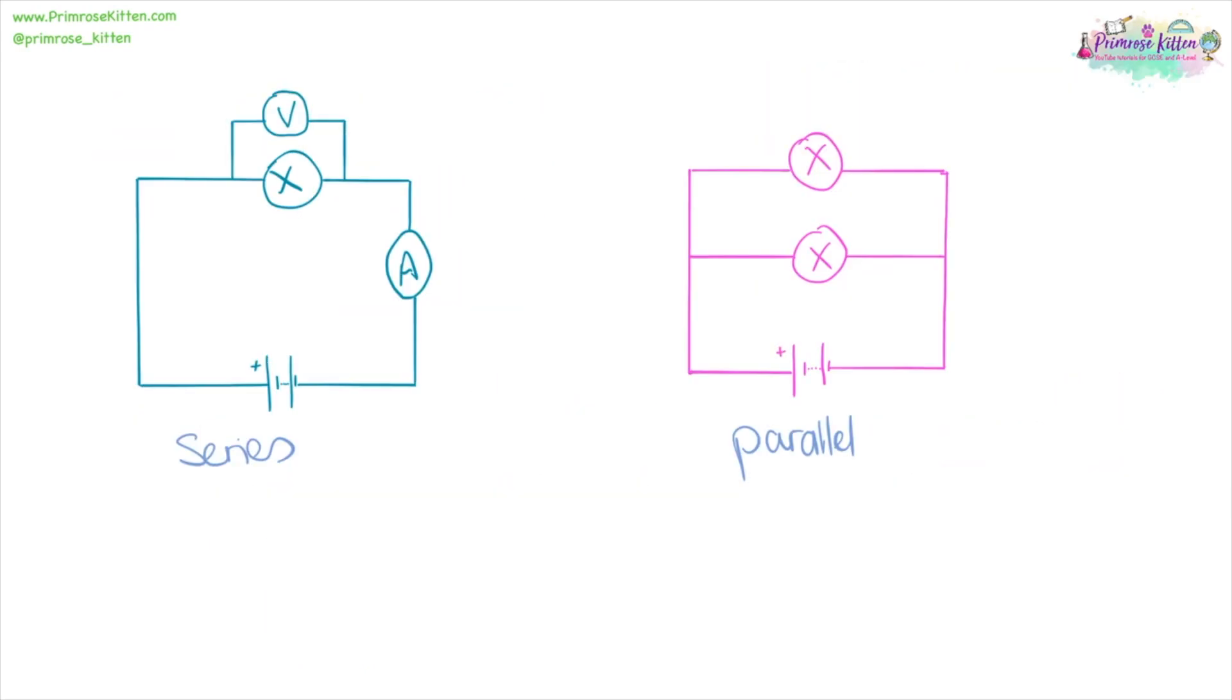Here we have a circuit in series where you can run your finger the whole way through from the battery to all the components. And here we have a circuit in parallel where it has like branches or ladders. You can't run your finger around everything without going over something twice.